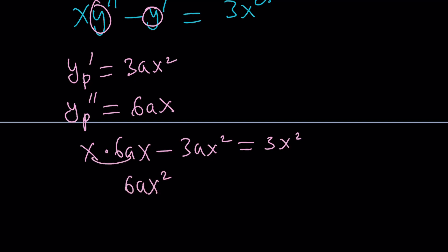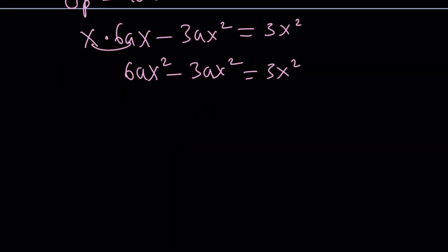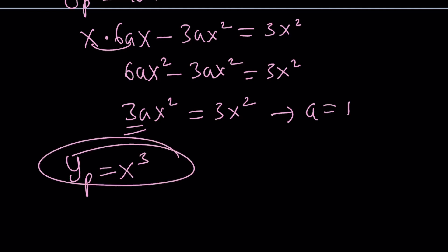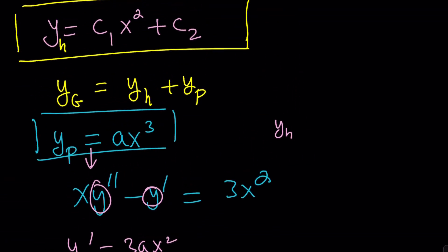And from here, as you can see, my assumption was actually good that I got something cubic. Because here, we get 3ax squared equals 3x squared for all x values. So, a is going to be 1 from here, which means y particular is supposed to be x cubed. Awesome. It works. We verified it. It's all good now.